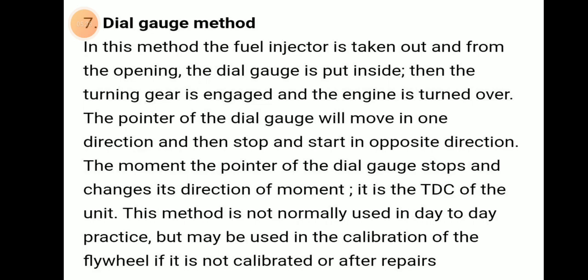The dial gauge method: the fuel injector is taken out from its opening and a dial gauge is placed inside. The turning gear is engaged and the engine is turned over. The pointer of the dial gauge will move in one direction, then stop and start moving in the opposite direction. The moment the dial gauge pointer stops and changes direction — that moment is the TDC of the unit.